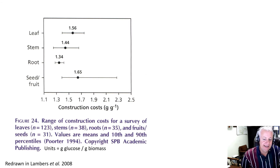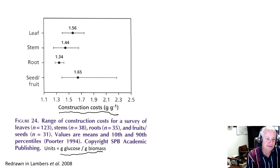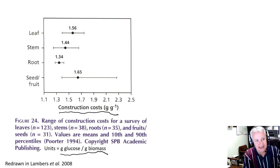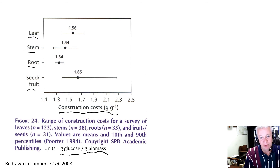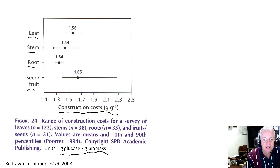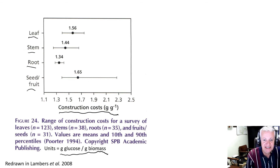This shows construction costs in grams of glucose per gram of biomass — the amount of glucose that has to be respired to produce the energy and carbon skeletons to produce a gram of leaf, stem, root, or seed for a range of different plant types. This is a review article by Porter in the Lambers et al. textbook. You can see there are different carbon costs or construction respiration costs associated with roots, stem, leaf, or seeds.